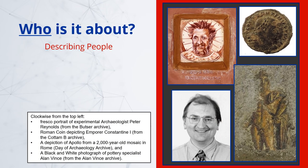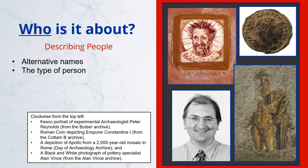Where a resource is about a particular person or figure, it is important that users can find it based on their name or common identification. Things to consider when describing people are alternative names or titles — is a historical figure known by different names by different researchers? Roman Emperor Constantine I, shown here on a coin, was also known as Constantine the Great, while the object itself might refer to him by his Latin name, Flavius Valerius Constantinus. It might be worth distinguishing between people who are contemporary to the resource, a known person, a historical figure, or a mythological one. Defining this ensures that search results are transparent or distinct.